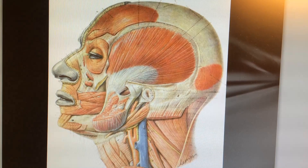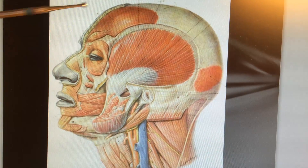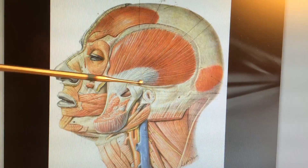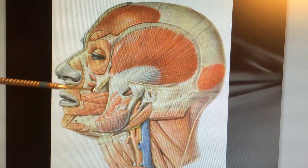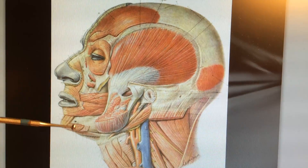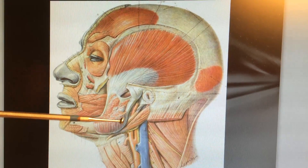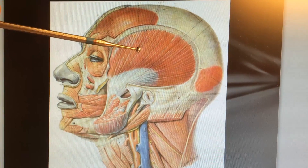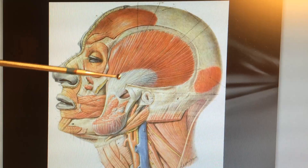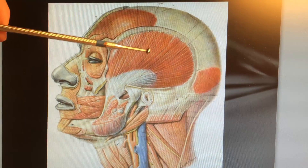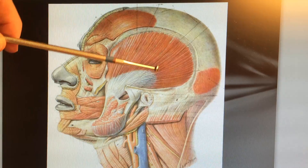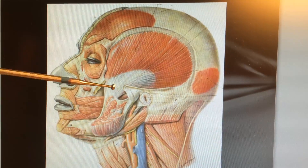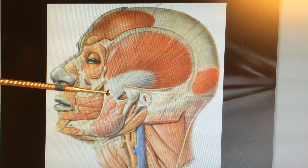Temporal tendonitis is a very common disorder, and I'm going to show you a picture of what the anatomy looks like. This is a picture of the side of the head. This is the temporalis muscle, and this is the temporal tendon. Here is the lower jaw, or the mandible. This is called the masseter muscle, which assists the temporalis muscle in closing the jaw so you can chew and bite your teeth together. You can see this large temporalis tendon as it attaches — or we say inserts — this large temporalis muscle into the lower jaw right here at the coronary process.